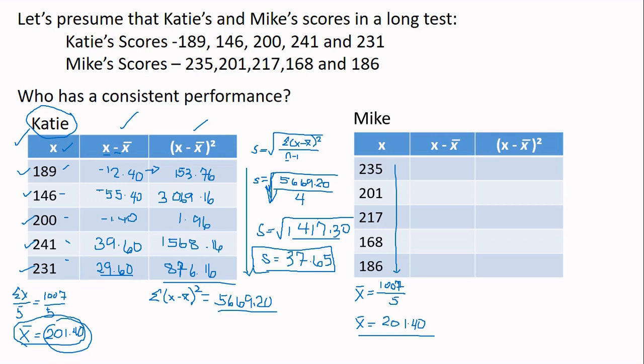So we'll look at their performance. We can't rely on the mean alone class. They have the same mean. So we're going to use the standard deviation to make that decision. Who has the better performance.